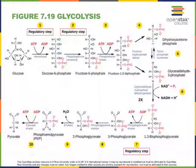The sixth step of glycolysis is the first step that involves oxidation and reduction. Glyceraldehyde-3-phosphate dehydrogenase catalyzes the oxidation of glyceraldehyde-3-phosphate and reduction of NAD to produce 1,3-bisphosphoglycerate and NADH. The NADH produced by this reaction can be used in the mitochondria to produce ATP in a process called oxidative phosphorylation. Step 7 is the first reaction to produce ATP: phosphoglycerate kinase transfers a phosphate from 1,3-bisphosphoglycerate to ADP, producing 1 ATP and 3-phosphoglycerate.